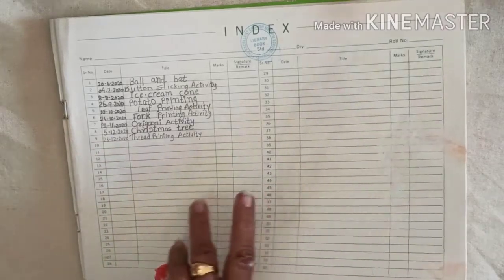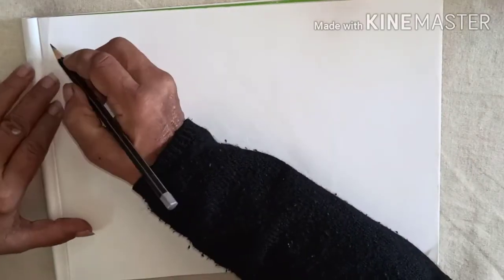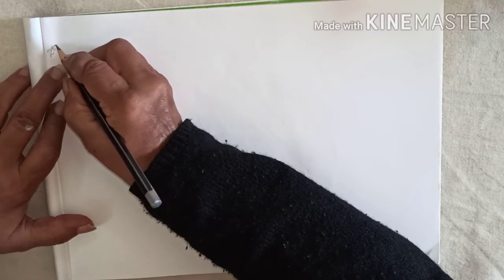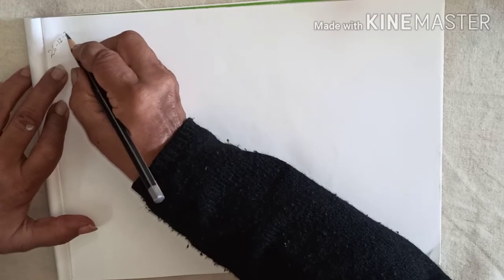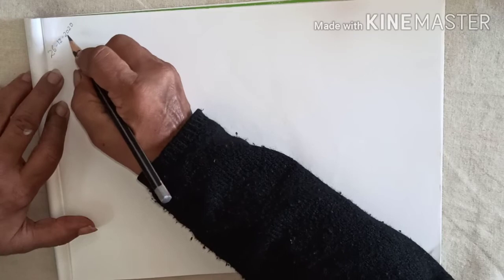Now open the blank page and write here first of all date 2, 6, dash, 1, 2, 12, dash, 2, 0, 2, 0. Okay? 26, 12, 20, 20.